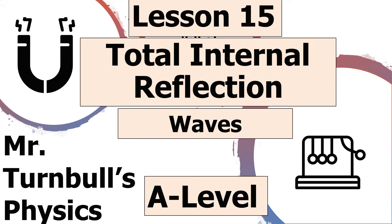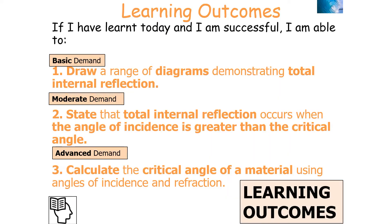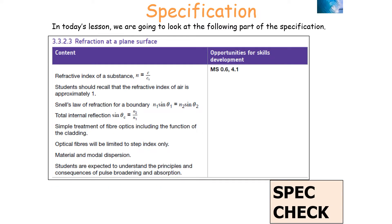Hello and welcome to this lesson on total internal reflection, which is part of the Waves topic in AQA A-level physics. In today's lesson we're going to look at describing total internal reflection. If we've been successful, we should be able to draw a range of diagrams demonstrating total internal reflection, state when it occurs, and calculate the critical angle using angles of incidence and refraction. We'll be looking at specification point 3.3.2.3: refraction at a plane surface.